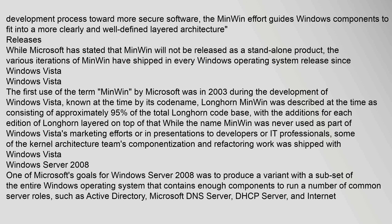While Microsoft has stated that Minwin will not be released as a standalone product, the various iterations of Minwin have shipped in every Windows operating system release since Windows Vista. The first use of the term Minwin by Microsoft was in 2003 during the development of Windows Vista, known at the time by its codename Longhorn. Minwin was described at the time as consisting of approximately 95% of the total Longhorn code base, with additions for each edition of Longhorn layered on top. Some of the kernel architecture team's componentization and refactoring work was shipped with Windows Vista.